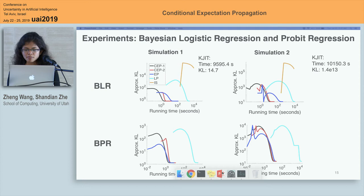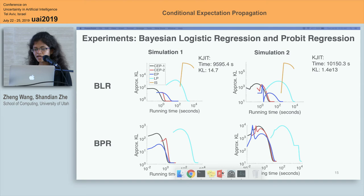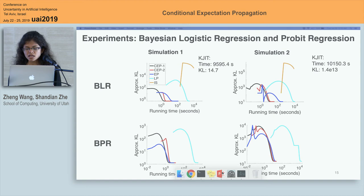To examine the quality of our algorithm, we first tested it on two classical models — Bayesian logistic regression and Probit regression — on two simulated datasets. CEP1 uses first-order Taylor approximation and CEP2 uses second-order Taylor approximation. We compared our algorithms with standard expectation propagation, Laplace propagation (LP), importance sampling based expectation propagation (IS), and the kernel-based just-in-time learning method (KJIT). As we can see, CEP1 and CEP2 always end up with similar approximate KL divergences to standard EP and are faster than the other methods. The performance of IS and KJIT are extremely bad even with sample sizes of 0.5 million, possibly due to the unstable accuracy of sampling methods.